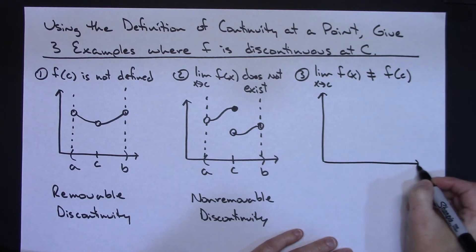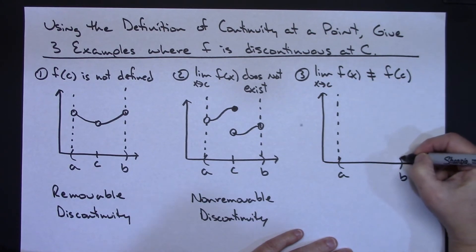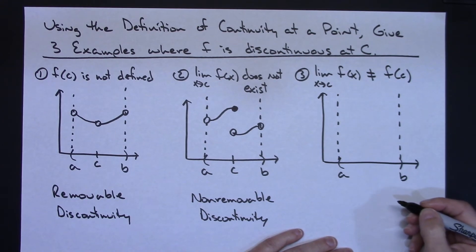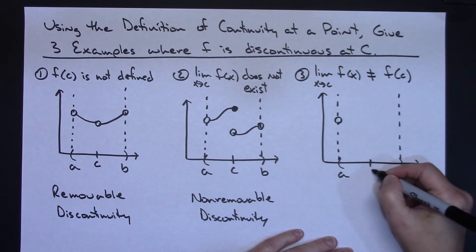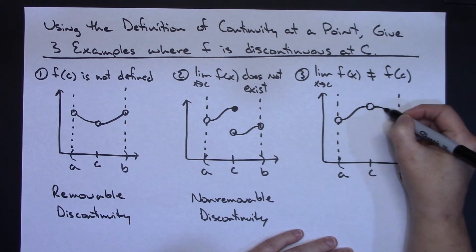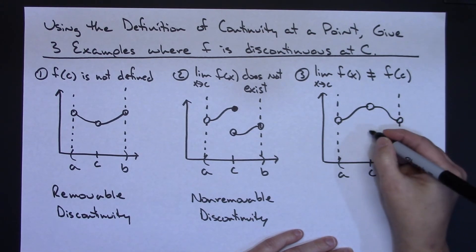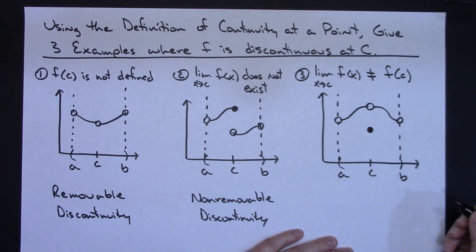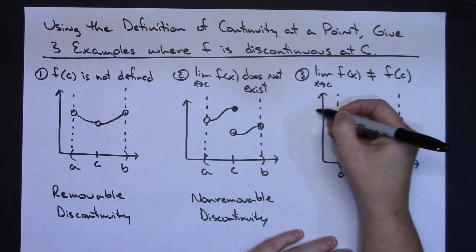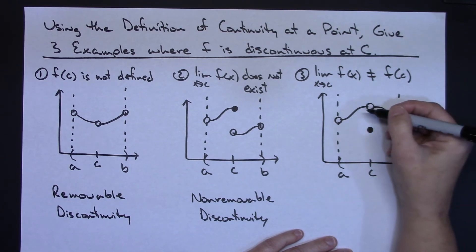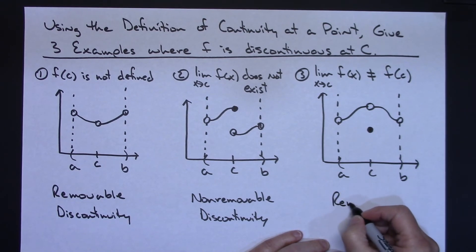Looking at the open interval from a to b, I need the limit not equaling f of c. So at c, my limit equals one value, but then f of c — when I plug c into the function — equals something different. Because this is a hole and I could fill that hole, it is a removable discontinuity.